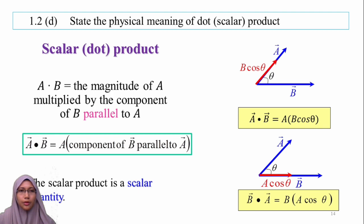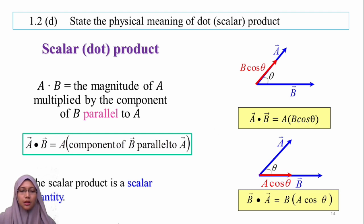The scalar product or dot product is written as A dot B. It is equal to the magnitude of A multiplied by the component of B parallel to A. Since the component of B parallel to A equals B cos theta, we have A dot B equals AB cos theta. The scalar product is a scalar quantity.